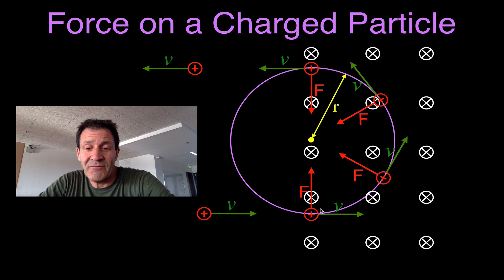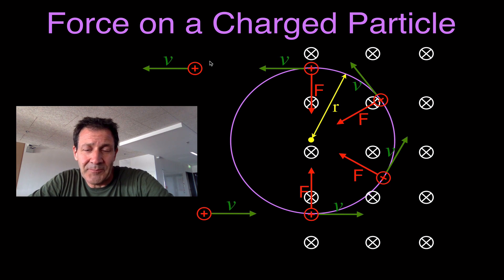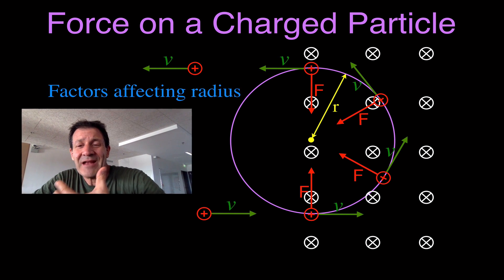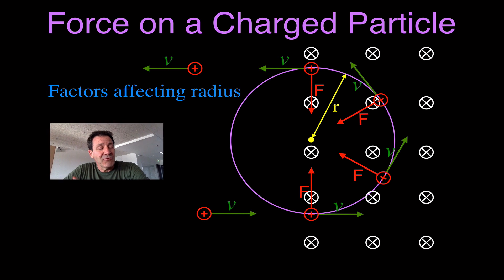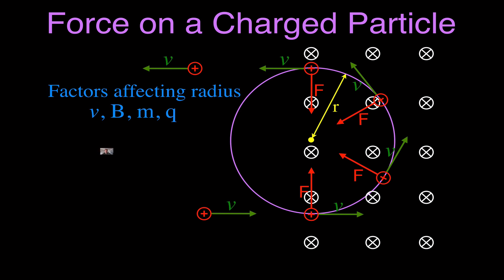The particle actually travels on a circular path — not parabolic or elliptical — through the magnetic field and then exits. What we often want to know is what factors affect the radius of that circle. There are four things: the velocity of the particle, the strength of the magnetic field B, the mass of the particle, and the charge of the particle. Think about how each factor would make the radius larger or smaller.